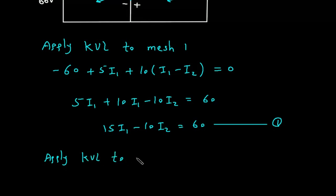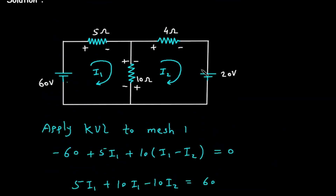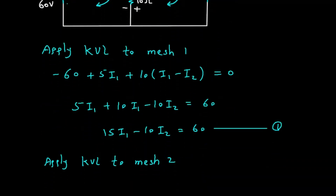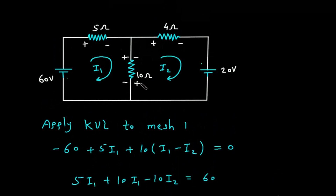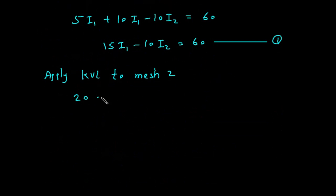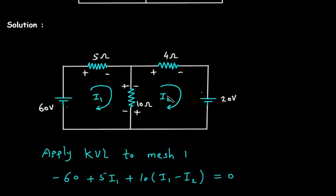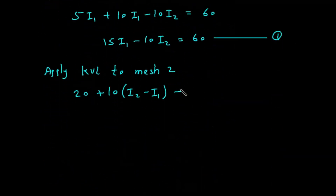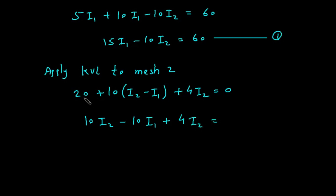Now we will apply KVL to mesh number 2. Starting here, this voltage source is positive, so plus 20, then plus 10(I2 minus I1), then plus 4I2 equals 0. Simplifying: 10I2 minus 10I1 plus 4I2 equals minus 20, which gives us minus 10I1 plus 14I2 equals minus 20. This is equation number 2.